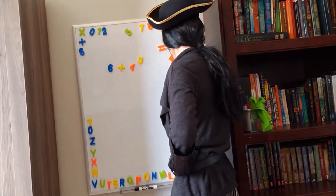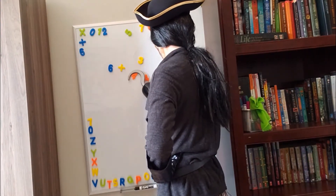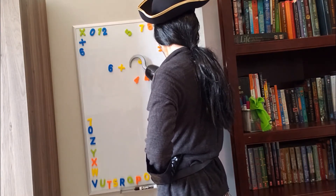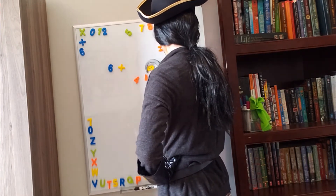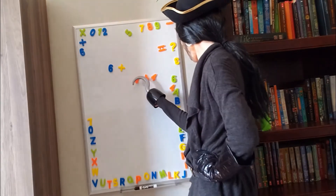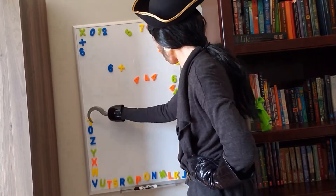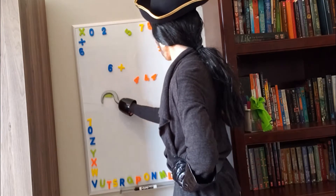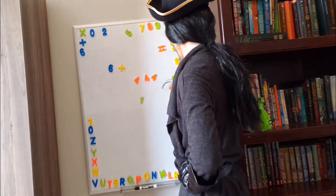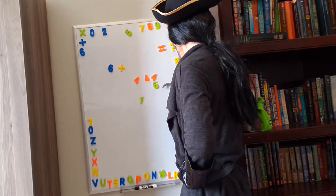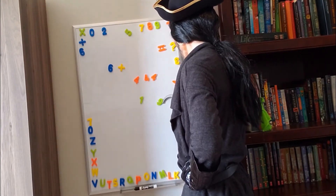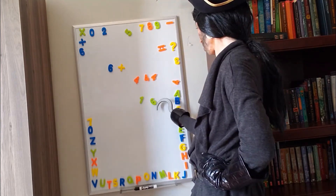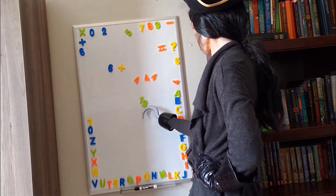So 4 cubed — that means I've got 3 of those 4s. I can rewrite that like this: 4 times 4 times 4. And I know that 4 times 4 is of course 16. So I'm going to rewrite that as well — get rid of 2 of those 4s, because 4 times 4 gives us 16.